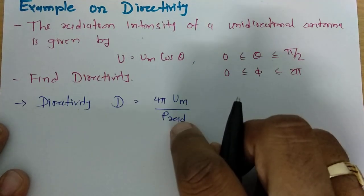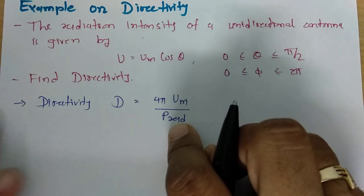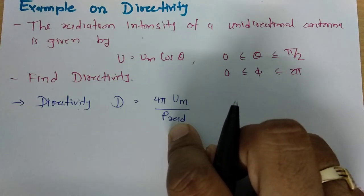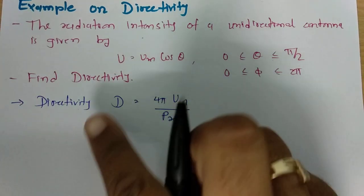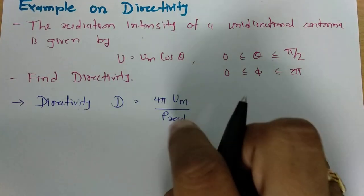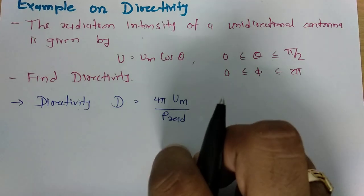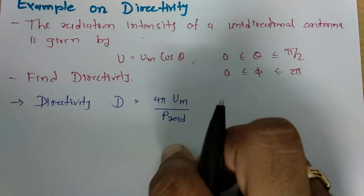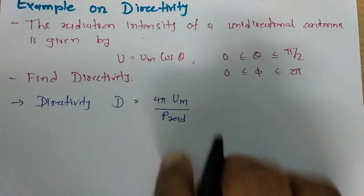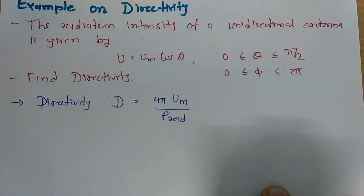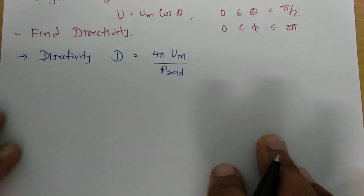Our aim is to calculate the radiated power, and once we calculate it, we place it into the directivity formula to find directivity. So first we calculate radiated power, then we calculate directivity.